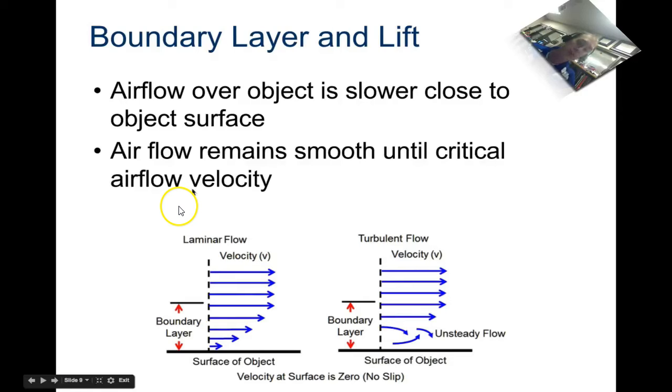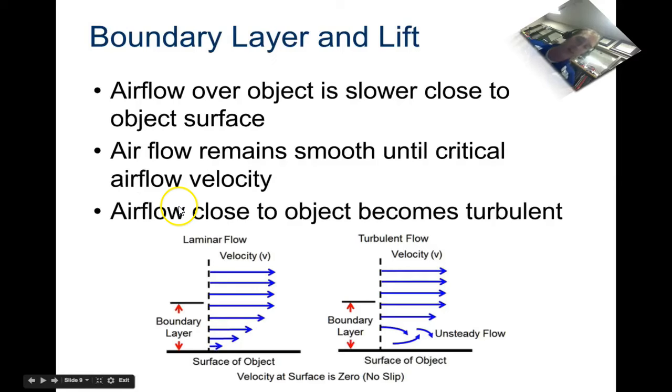It becomes a little bit more turbulent on the boundary layer. Airflow does remain smooth until critical airflow velocity. As we get faster and faster, there's a lot more drastic effect of slowing down near the surface, and that's why it becomes turbulent.